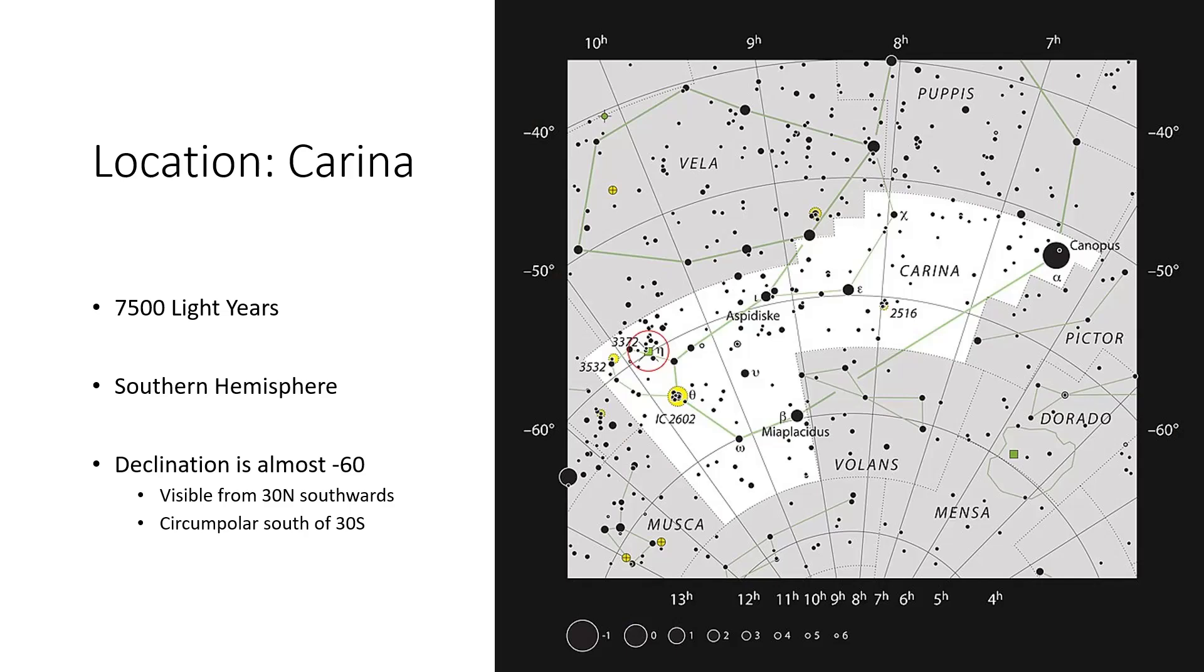It's a fairly modest looking star to the naked eye, and you can find it using the star map that we've got here. It's ringed in red amongst all those star fields down around 60 degrees declination south, so minus 60.